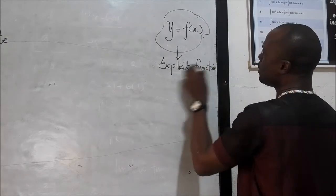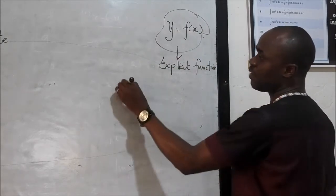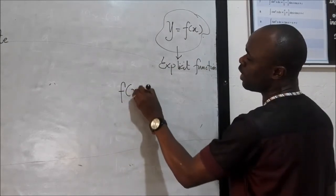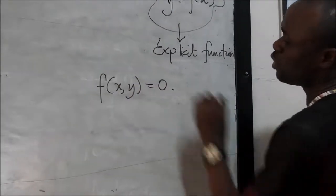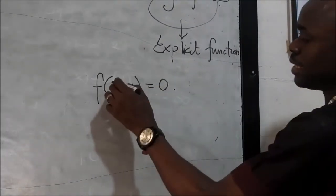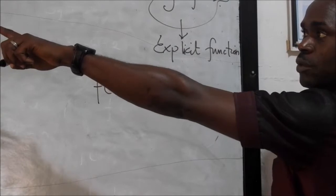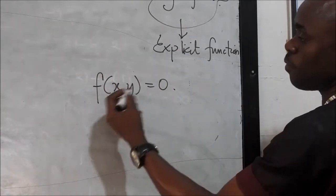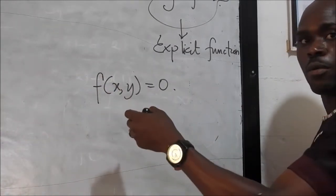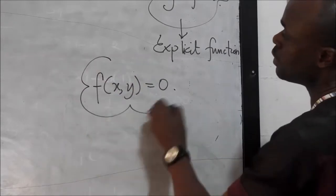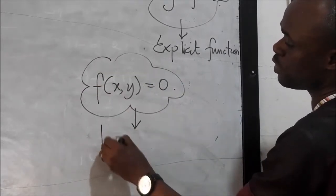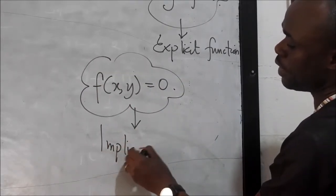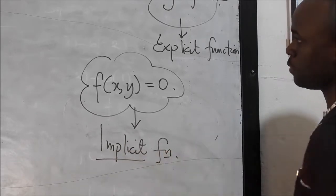But on the other hand, we may not have it like this all the time. We can have something like f of xy equals to zero. In a case like this, that is an example there which we are going to solve. We have a combined function, we have x and y combined. So we call this an implicit function. So this is implicit in nature.